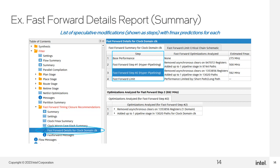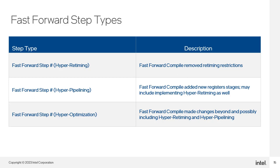This screen capture shows an example Fast Forward Details report for a single clock domain design. In the Step column, you can see there are four steps reported: Base Performance, Fast Forward Steps 1 and 2, and Fast Forward Limit. Row 1, the Base Performance, contains the initial results — the same performance reported by the retime stage of the fitter. Rows 2 and 3 show the results of collections of Fast Forward Modifications, with each step building on the last. The last row, Fast Forward Limit, provides information required for performing more advanced HyperOptimization or modifications beyond those allowed during Fast Forward Analysis.